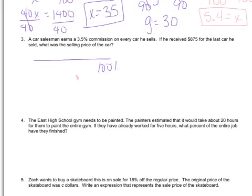Well, in this case, that would be the selling price of the car, which we don't know. 100% would be how much the car was. We know that he got $875 for it, which was the same as 3.5% because that's how much commission he gets.